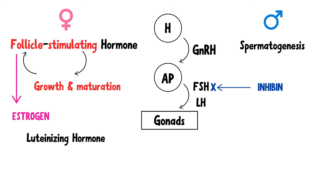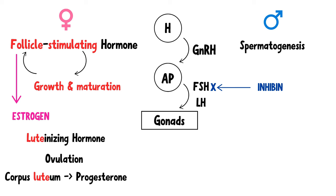LH, or luteinizing hormone, in females stimulates ovulation. After ovulation, LH stimulates the corpus luteum to produce progesterone, which is crucial for maintaining the uterine lining for a potential pregnancy. In males, LH stimulates Leydig cells in the testis to produce testosterone — a hormone essential for sperm production like FSH — and the development of male secondary sexual characteristics.